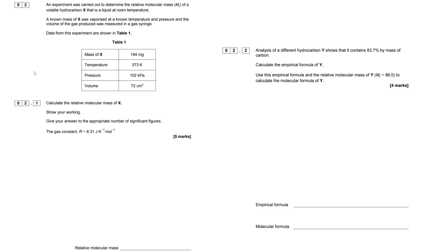Now this is an AQA question, but this sort of calculation can be applied to any exam board, so don't let that throw you off. It's still incredibly useful practice. So try your best to follow along, tell the questions yourself, fill in the blanks where you don't understand. An experiment was carried out to determine the relative molecular mass, or MR, of a volatile hydrocarbon X, so we don't have any clue what this is, but it's a liquid at room temperature. A known mass of X was vaporized at a known temperature and pressure, and the volume of the gas produced was measured in a gas syringe.